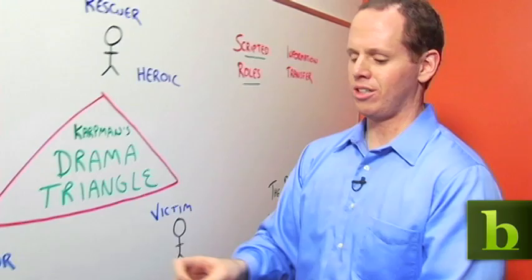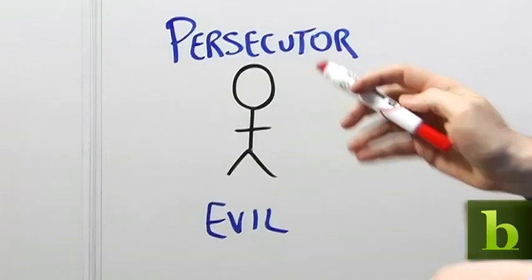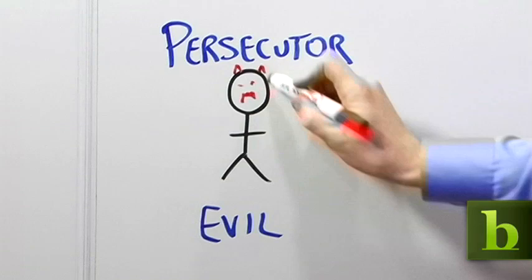We'll start down here with the persecutor. The persecutor is the mean, nasty person, we'll draw with horns here and a pitchfork, who takes advantage. He or she is evil, abuses people, abuses resources.